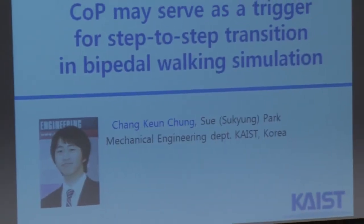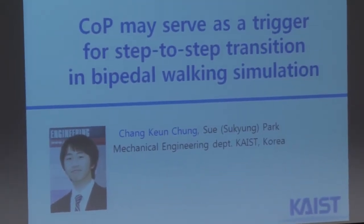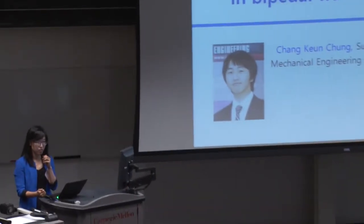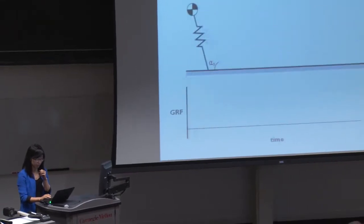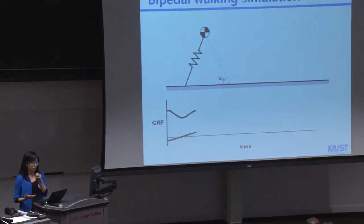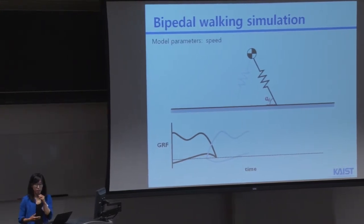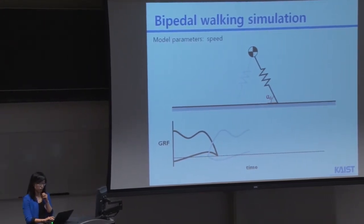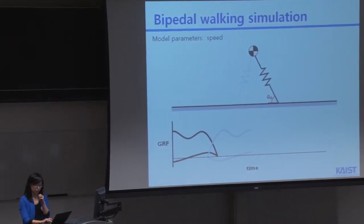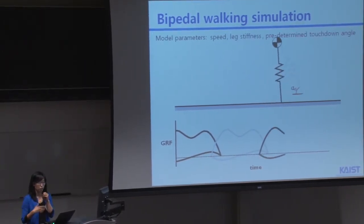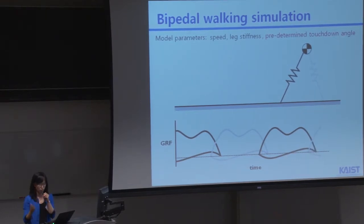On behalf of my graduate student, Chang Geun-jung, I'm Sue Park. I'm going to present the center of pressure trigger step-to-step transition criteria. When you run bipedal walking simulation, you should define the speed that you want to run on, and then you should set the leg stiffness, and also you should define the touchdown angle, so that your model can switch from the single support stance to the double support phase.